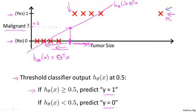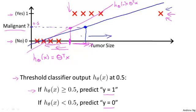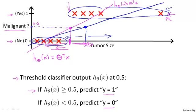But once we've added that extra example out here, if you now run linear regression, you instead get a straight line fit to the data that might look like this. If you now threshold this hypothesis at 0.5, you end up with a threshold that's around here, so that everything to the right of this point you predict as positive, and everything to the left you predict as negative. This seems a pretty bad thing for linear regression to have done because these are our positive examples, these are our negative examples, and we really should be separating the two classes somewhere around there. But somehow, by adding one example way out here to the right, this caused linear regression to change the straight line fit from this magenta line to this blue line and give us a worse hypothesis.